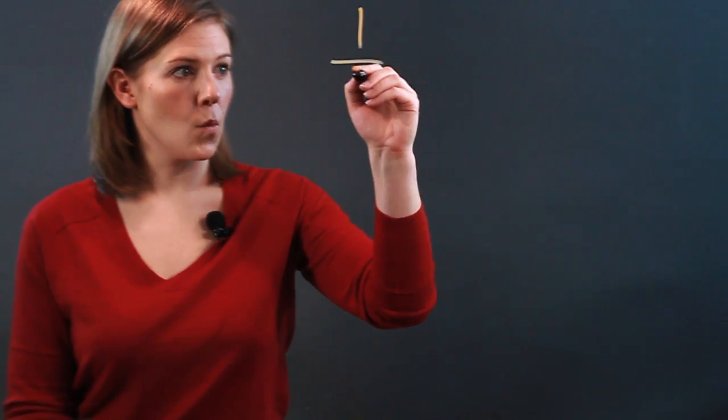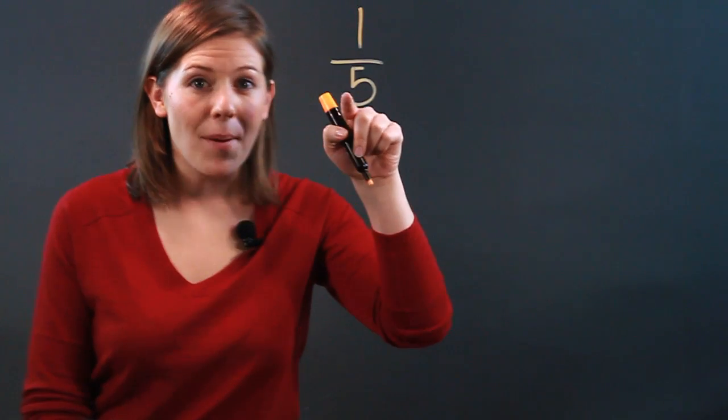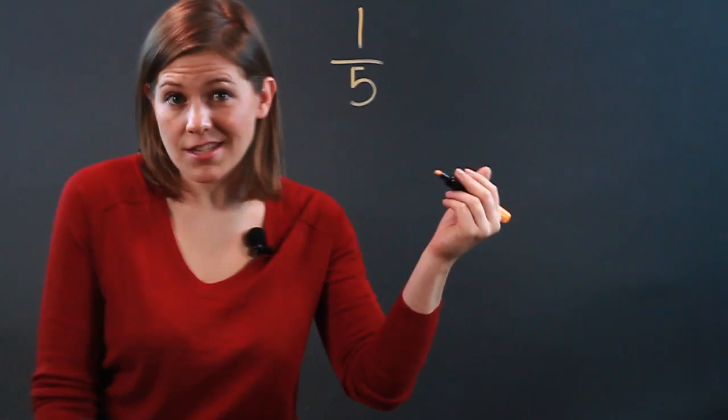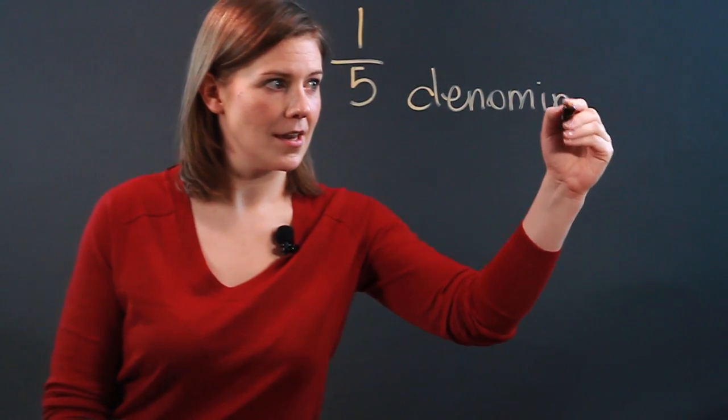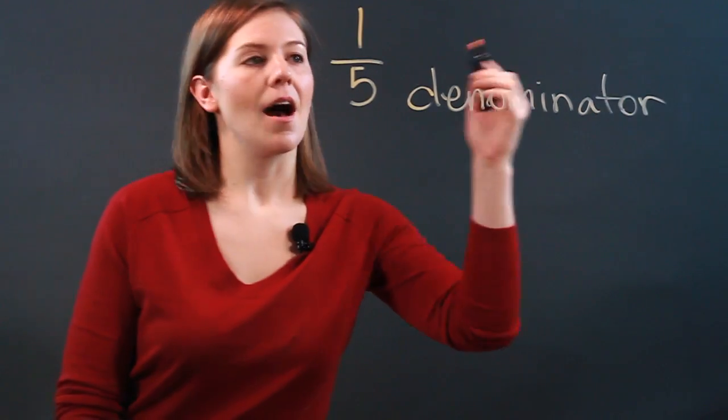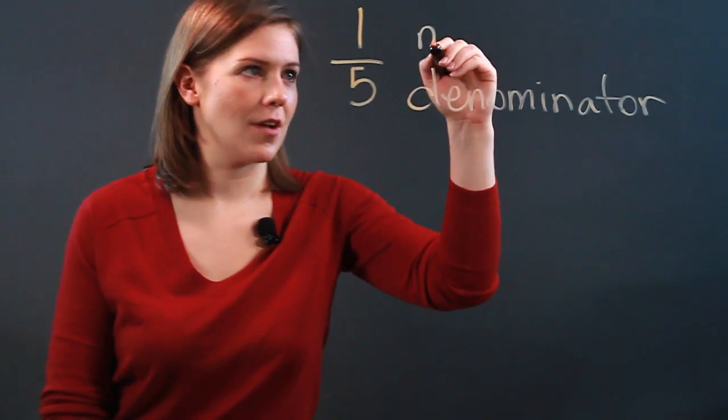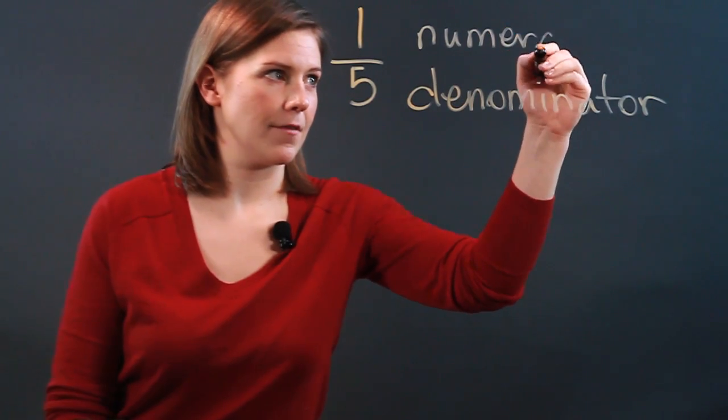If you were to see the fraction one-fifth, the bottom number is your denominator. This is your denominator. Above, you have your numerator. The numerator goes above.